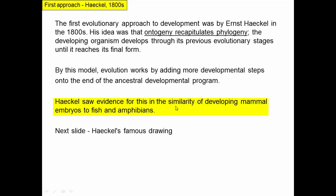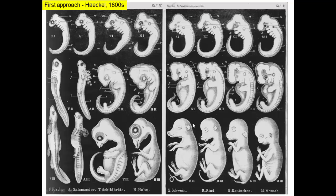Haeckel saw evidence for this in the similarity of developing mammal embryos to fish and amphibians. He made a very famous drawing, which is on this next slide. This is a diagram that Haeckel made — he's German, so these words are all in German. We've got salamanders here: they start off like this and then they develop and end up like this, and then we've got a number of other things here.